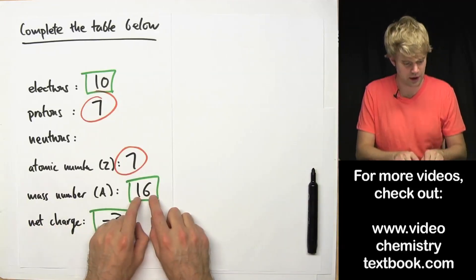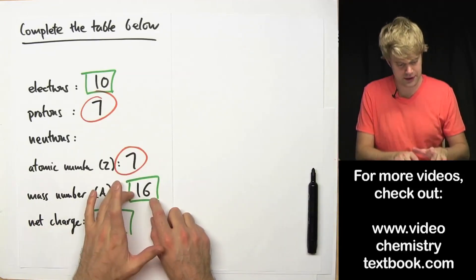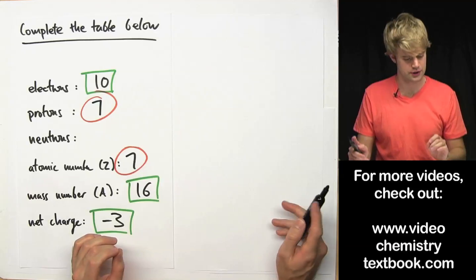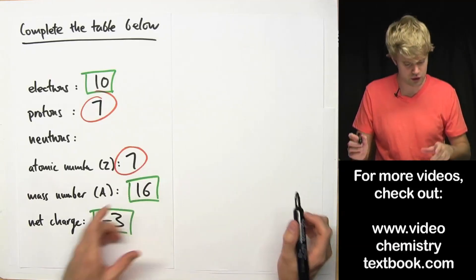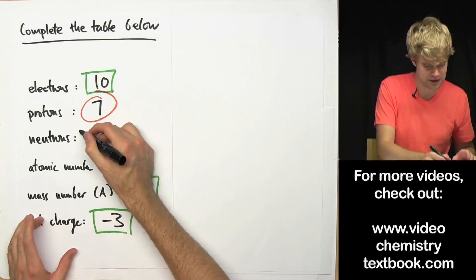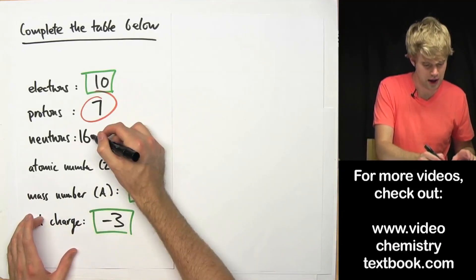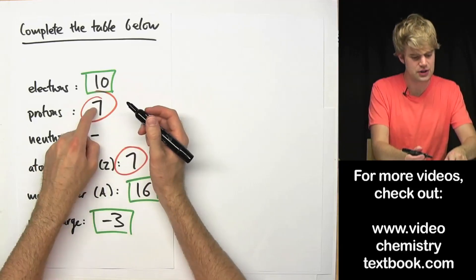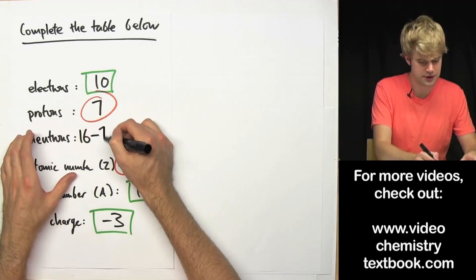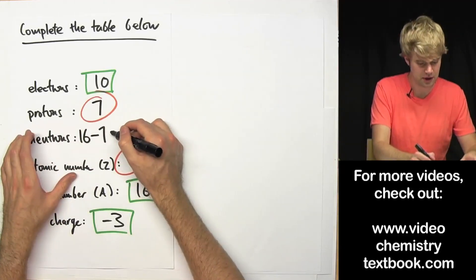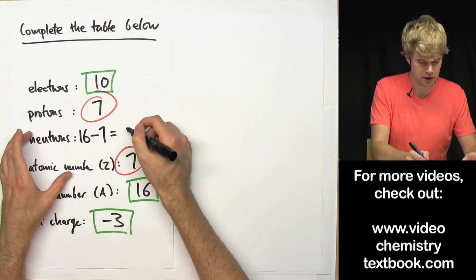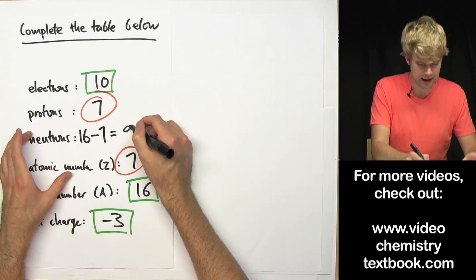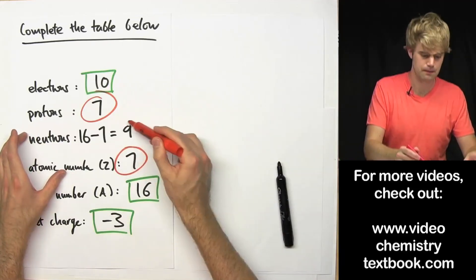The mass number here is the number of protons plus the number of neutrons. So to get just the number of neutrons, I take the mass number — protons plus neutrons — minus the number of protons, 7, and that is going to give me 9 neutrons.